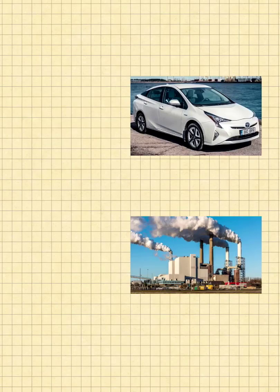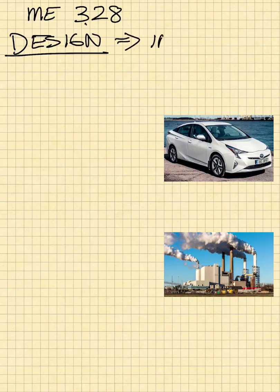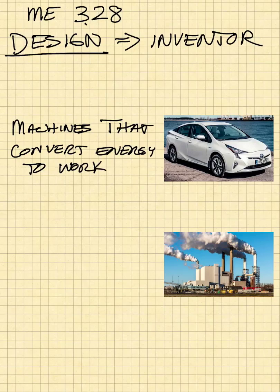I'm presuming that each and every one of you is interested in designing and building things, which makes you an inventor. The primary areas we deal with in mechanical engineering are building machines that convert energy to work. The best example of that is a car. I show a Toyota Prius, which is a pretty interesting car because it has not only an internal combustion engine, but also an electric motor. It uses gasoline as a fuel and also a battery to store electrical energy, which it also uses as a fuel. So that is an interesting system.